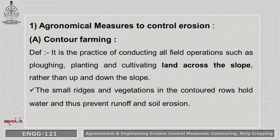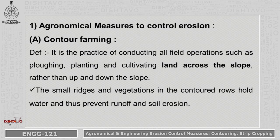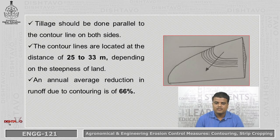The first measure is Contour Farming. It is the practice of conducting all field operations such as plowing, planting, and cultivating land across the slope rather than up and down the slope. The small ridges and vegetation in the contoured rows hold water, allowing it to infiltrate into the earth, raising the water table and controlling erosion. Tillage should be done parallel to the contour lines.